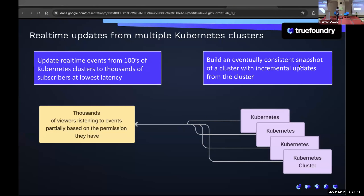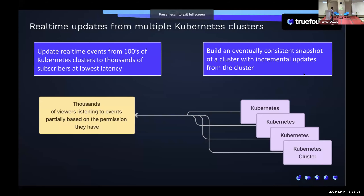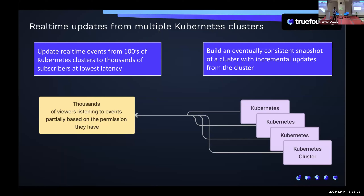We need to relay real-time information from all these Kubernetes clusters to these viewers, with authorization in between. We cannot let every user see every event from every cluster — we need to control which user sees what events from what Kubernetes cluster. The second problem was that depending on the state of each Kubernetes cluster, our control plane takes a lot of decisions. We need to know the exact state of a cluster at any point in time to take those decisions correctly.